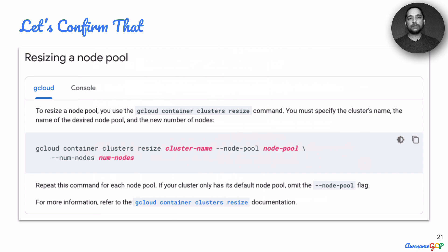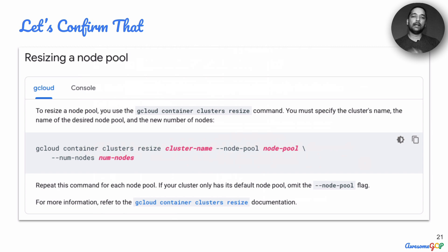Let's just confirm that's the case. Looking at the documentation for resizing a node pool, it says: to resize a node pool, you use the gcloud container clusters resize command. You specify the cluster's name, the node pool, and the new number of nodes that the node pool should have.